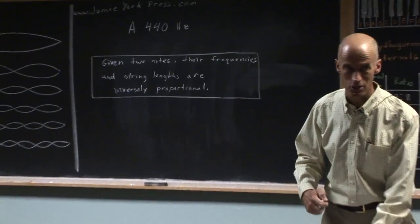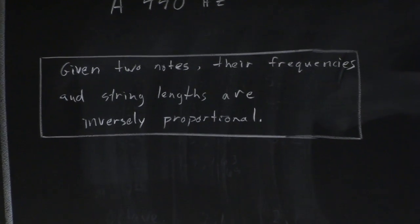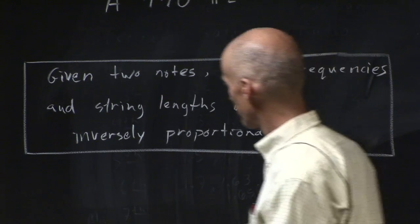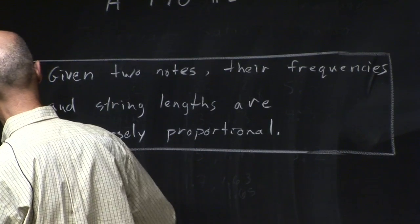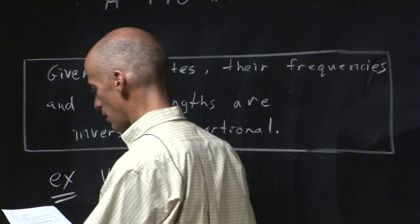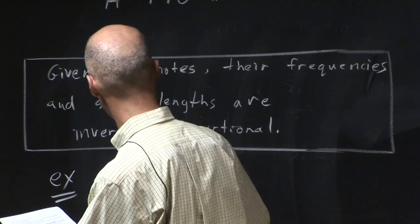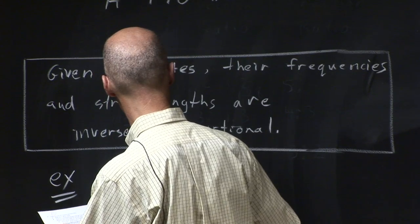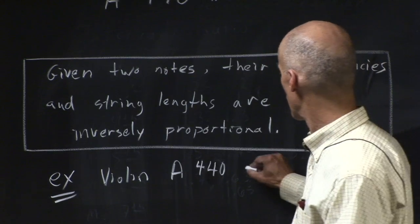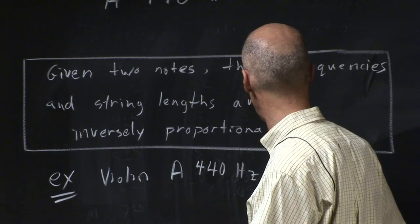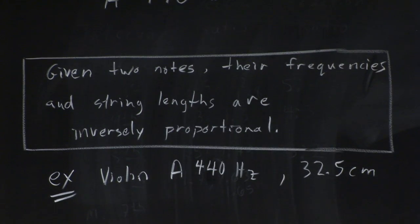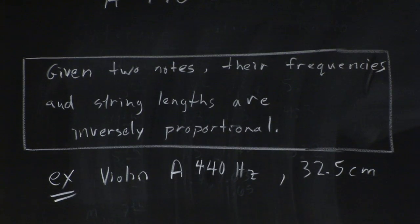So what does that actually mean? I'm going to give you an example that I think is quite important for us moving forward. Let's imagine we have a violin A string. I just said that A string is 440 hertz, and it's 32.5 centimeters long.